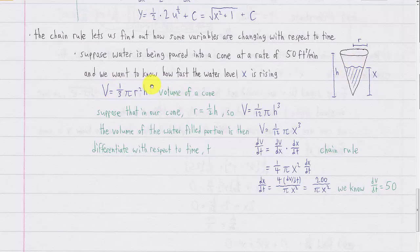Before we differentiate, it would be easier if we could get this down to one independent variable — in other words, either eliminate h or eliminate r. What we want to find is how fast the water level is rising. The water level x is the height of this little cone, so ideally we want to get rid of the radius term so we can solve for the rate of change of the height.